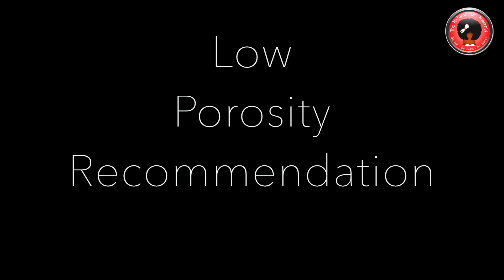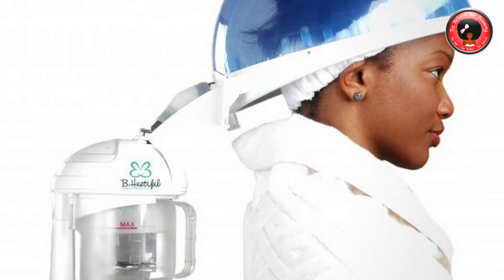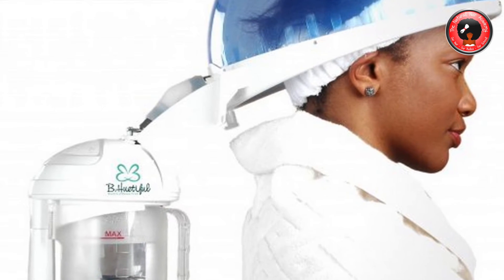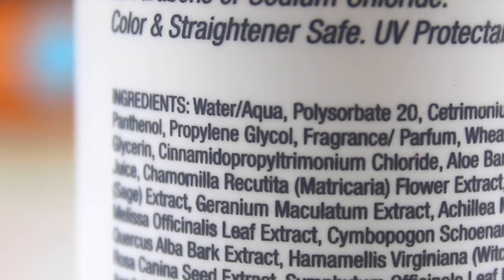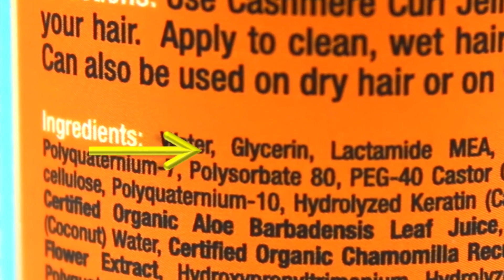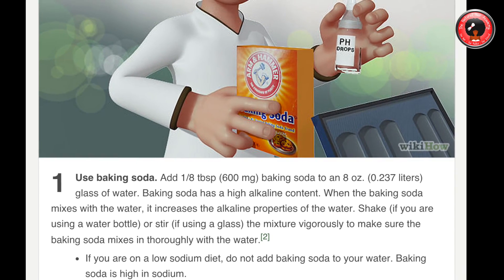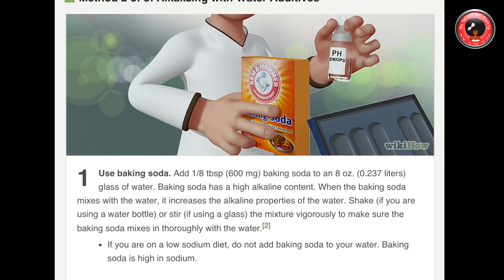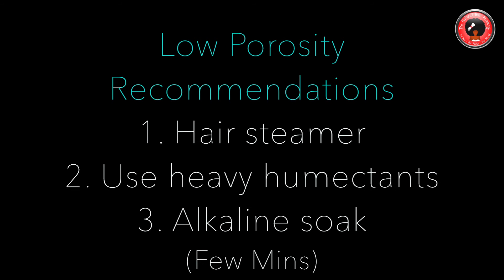If you have hair with low porosity, or it's considered to be resistant type hair, you can help to infuse more moisture into your hair using a few different methods. First, try incorporating a steamer into your hair care regimen. Secondly, try using products that are rich in humectants such as propylene glycol or glycerin, which will help to draw moisture from the air to the hair. Lastly, maybe try soaking the hair in alkaline water for a few minutes just to slightly increase the pH of the hair, which in turn helps to open the cuticle more and allows you to infuse more moisture directly into the strands of the hair.